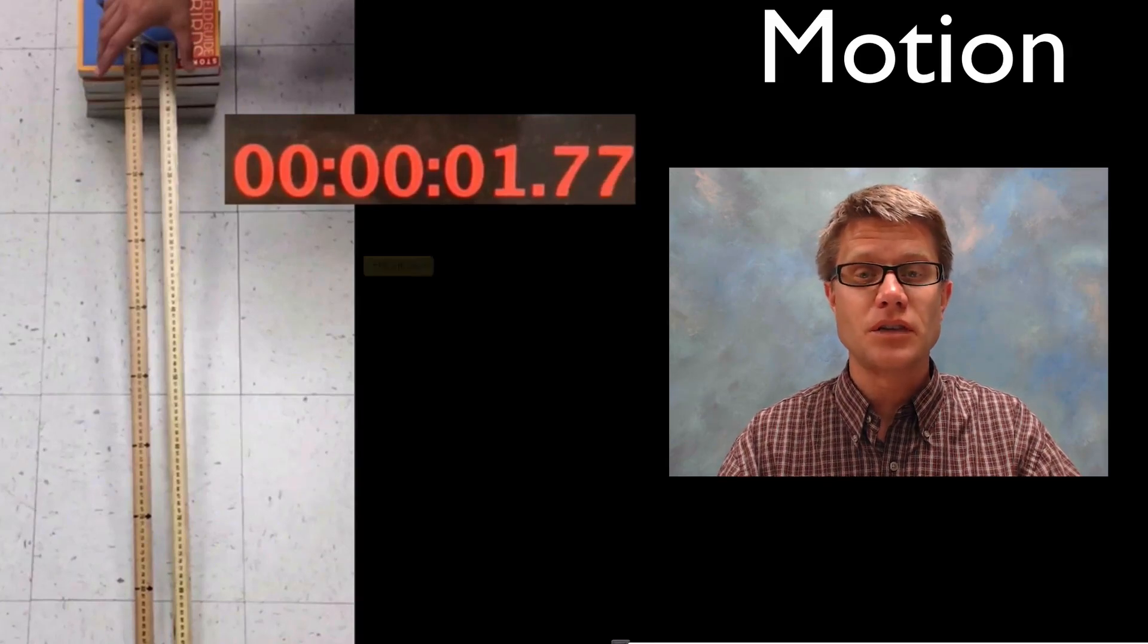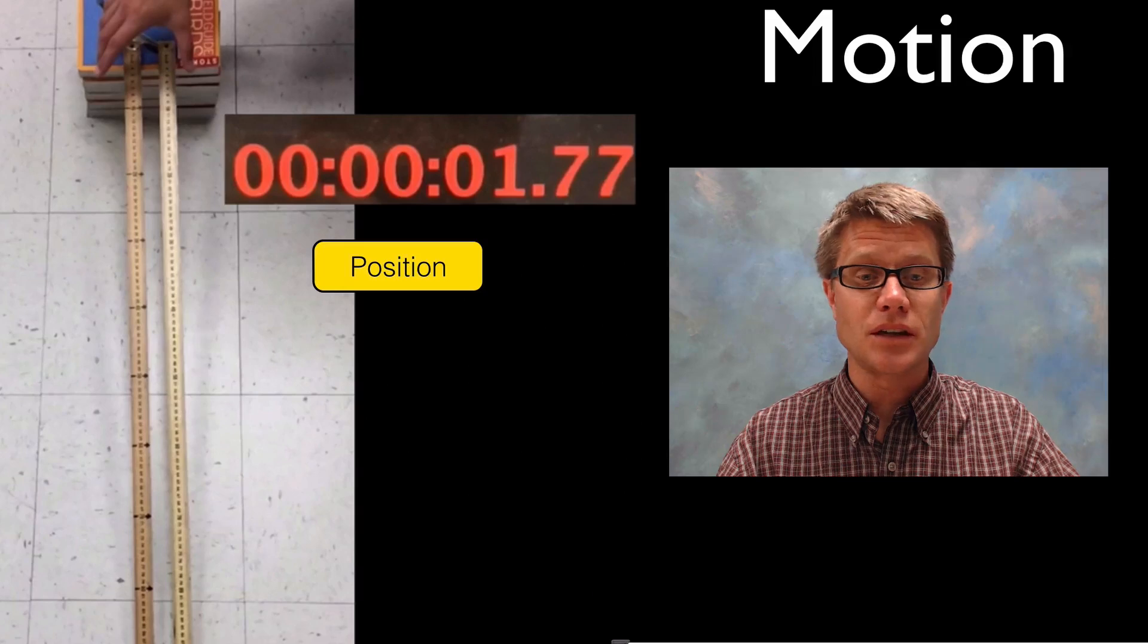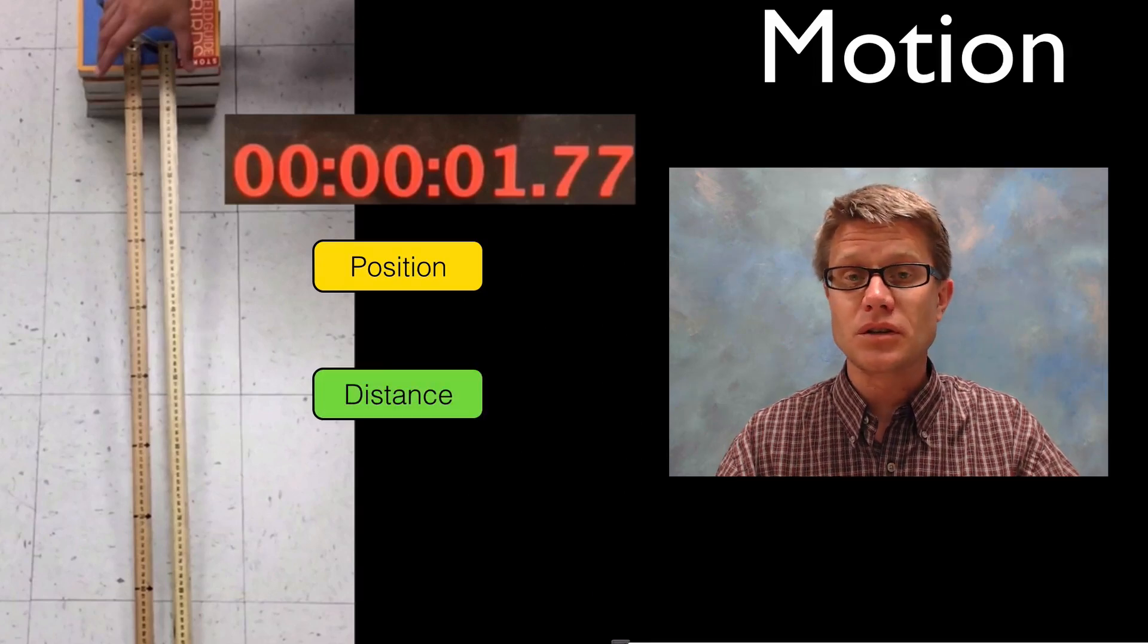Now I can take those numbers and start to observe the motion. If you were to ask somebody what's that tennis ball doing, you could say it starts at position zero, moves a certain distance, and is speeding up over time.